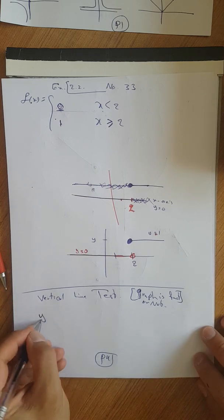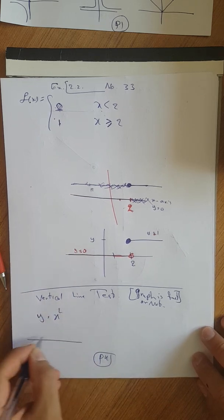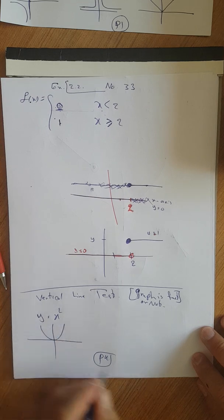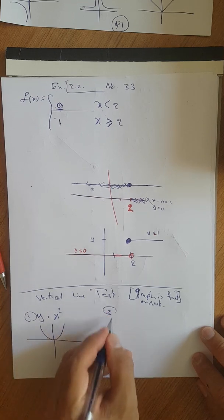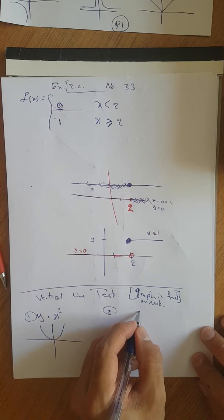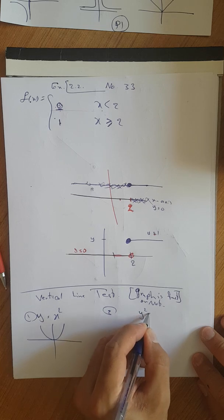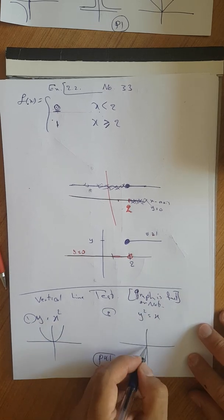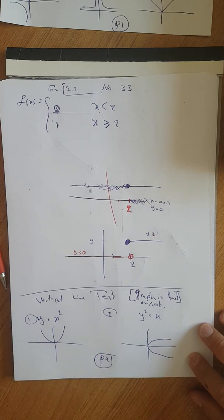For example, if I say y is equal to x squared, or I say y squared is equal to x, or x is equal to y squared, so in that case we have...